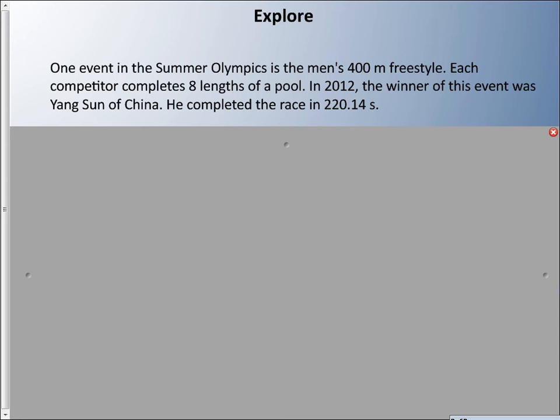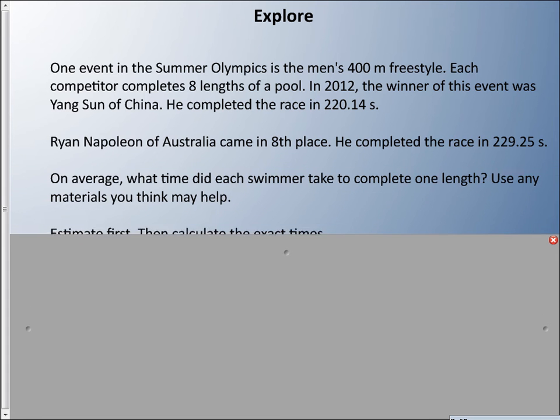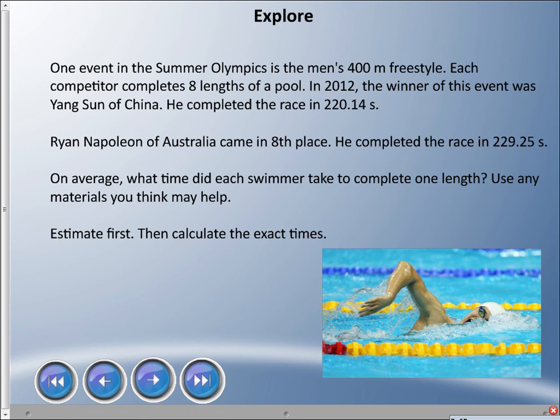One event in the Summer Olympics is the men's 400 meter freestyle. Each competitor completes eight lengths of a pool. In 2012, the winner was Yang Sun of China who completed the race in 220.14 seconds. Ryan Napoleon of Australia came in eighth in the final heat and completed the race in 229.25 seconds. So on average, what time did each swimmer take to complete one length? Try this out using any materials you think may help you. Estimate first and then calculate the exact time.